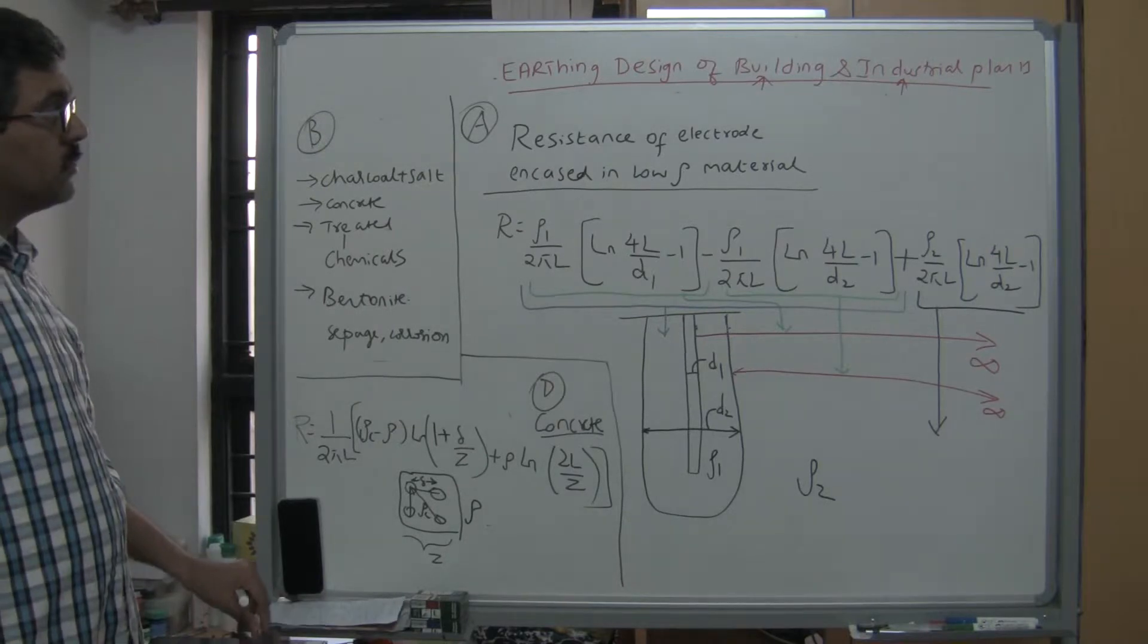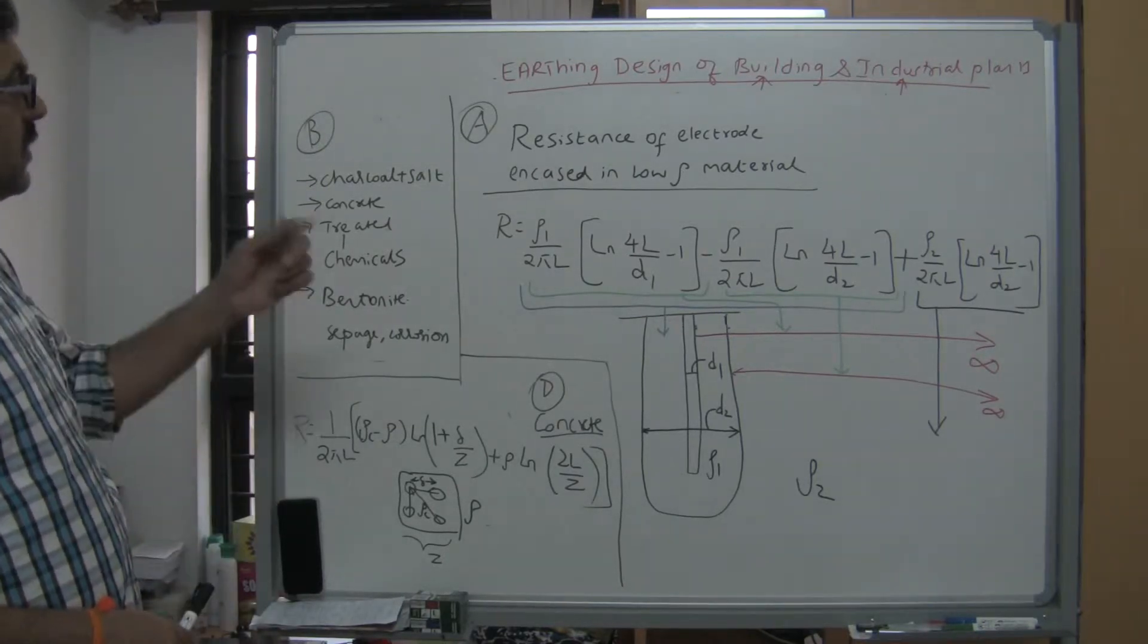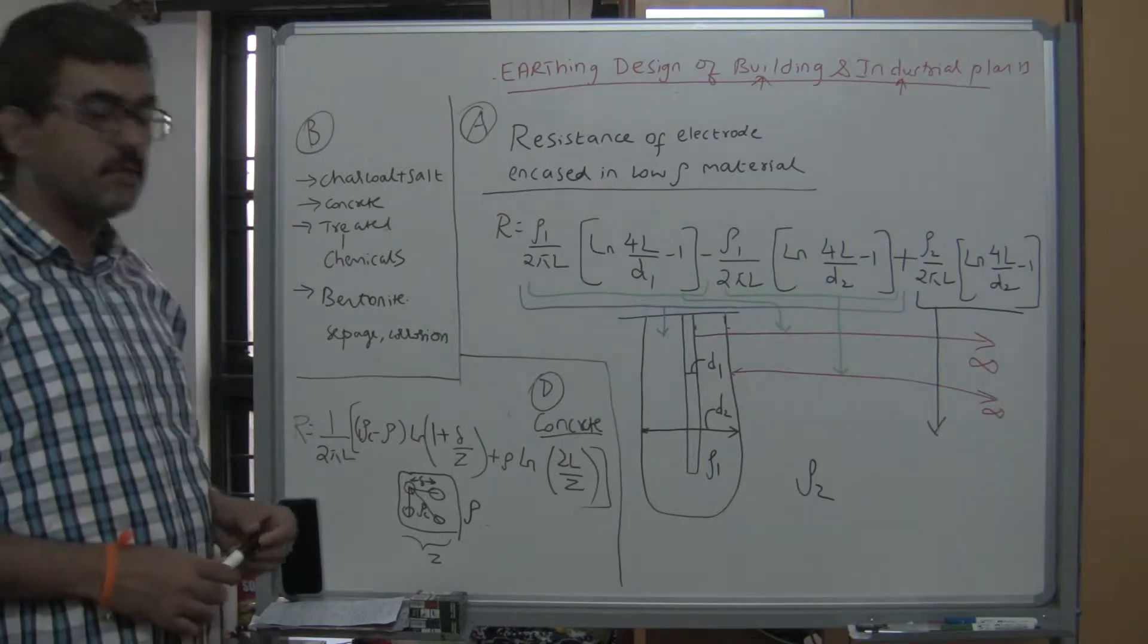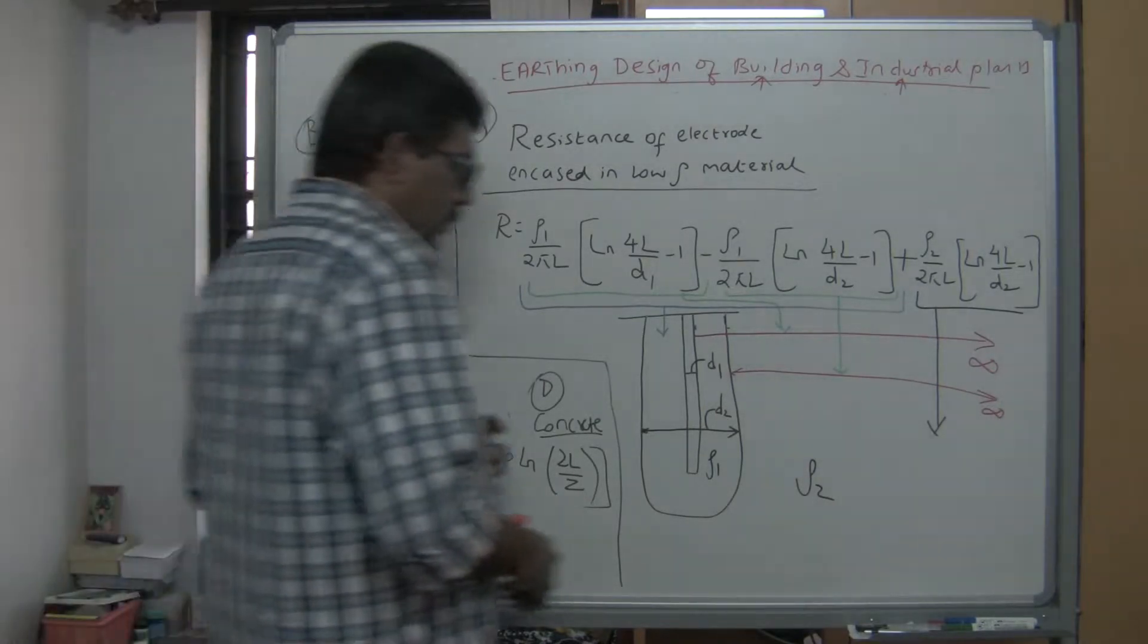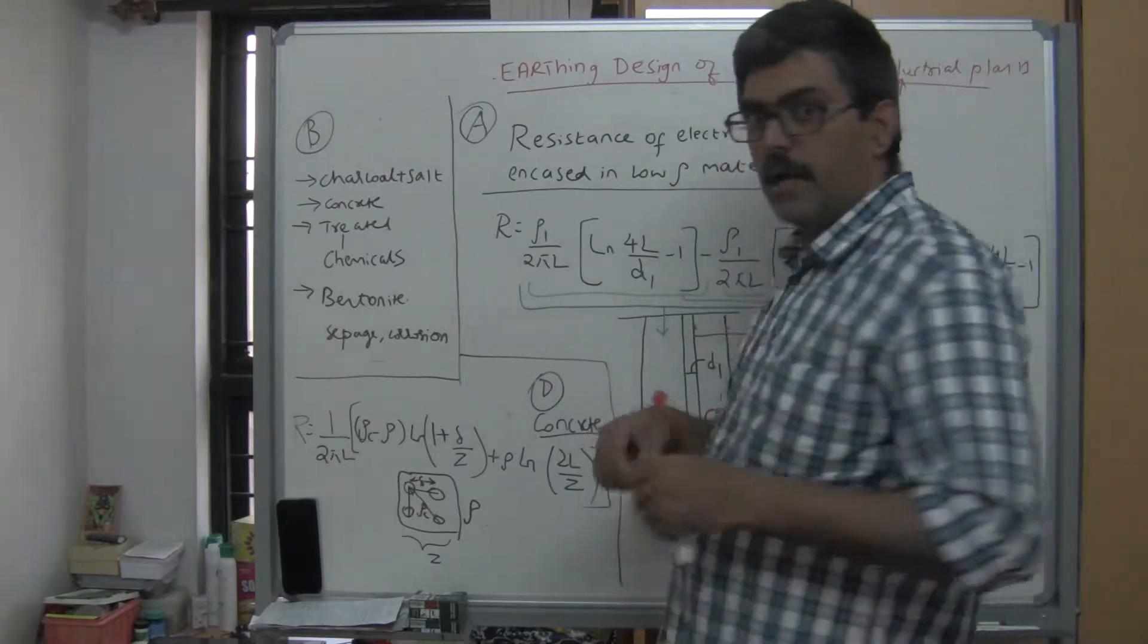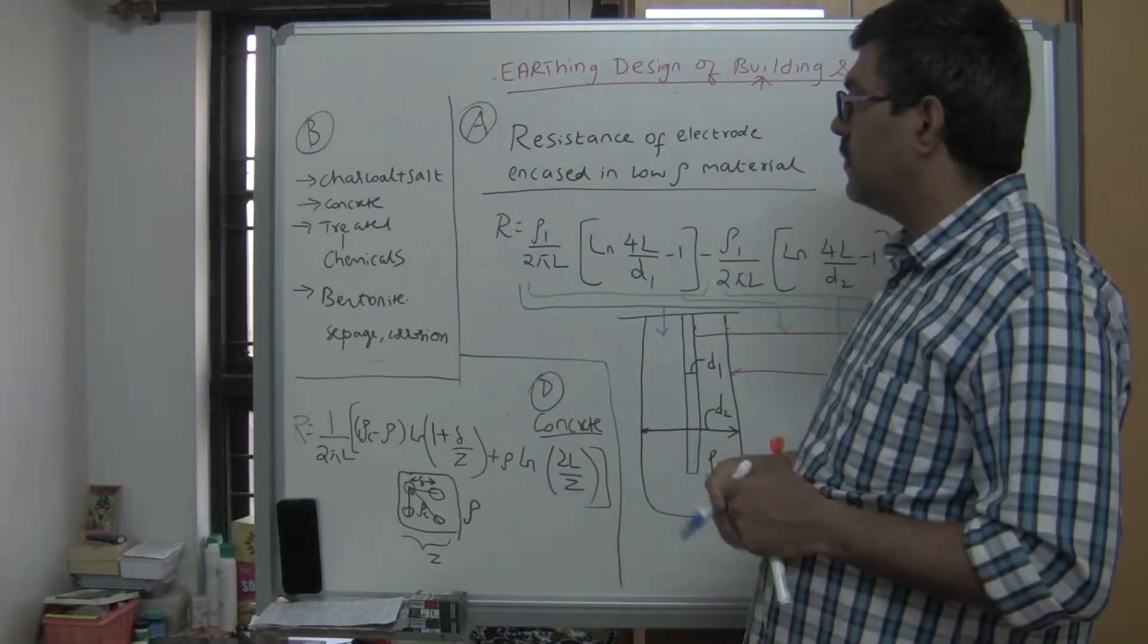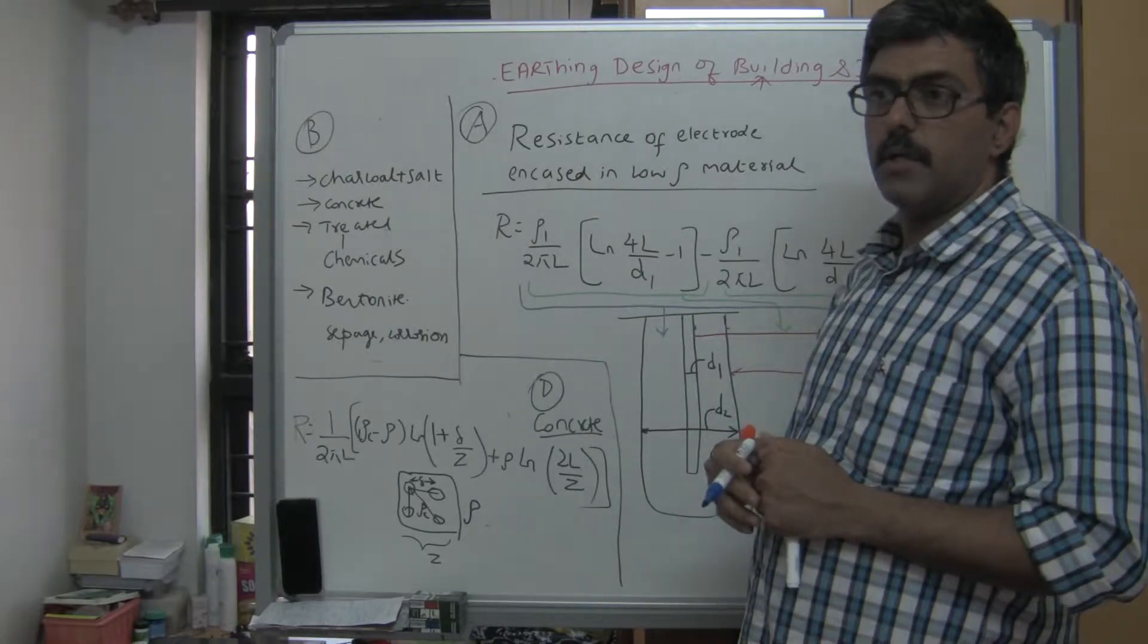Now I will explain about the resistance of an electrode encased in low resistivity material. Whenever some area has very high resistivity, we have different options in order to get a low resistance.